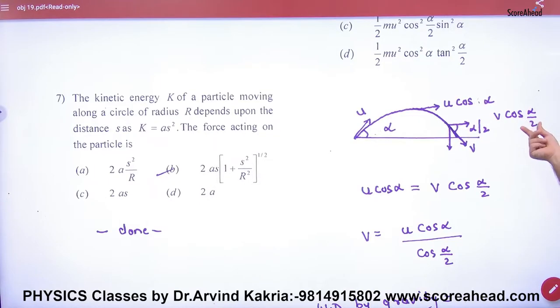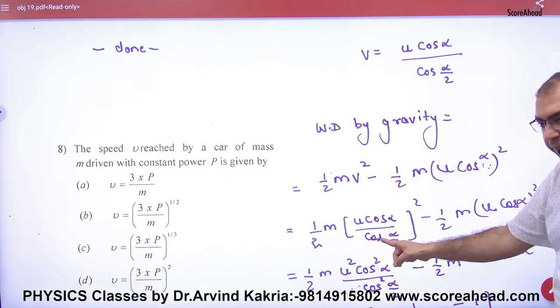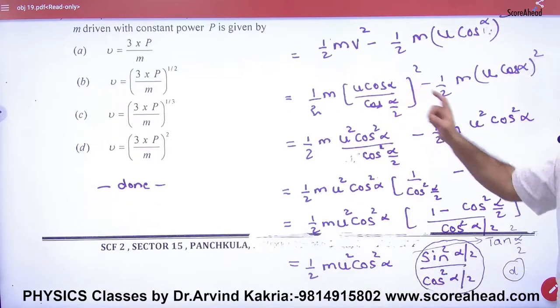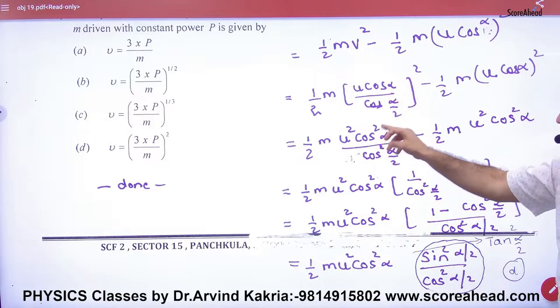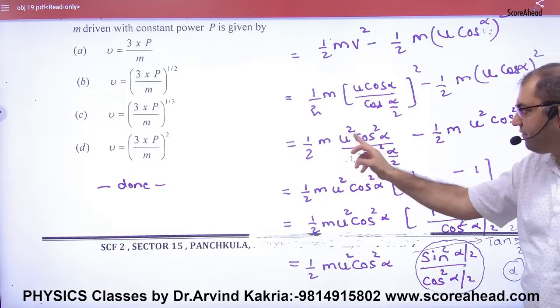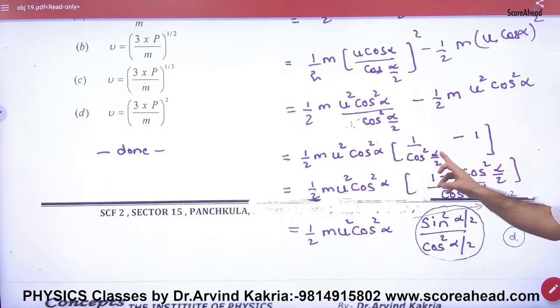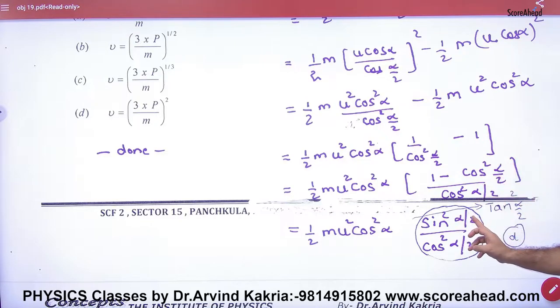This point velocity is v. Change of energy: half mv square minus half m u cos alpha square. Change of kinetic energy equals work done. Horizontal velocity u cos alpha is equal to v cos alpha by 2, because v I have assumed. So here, solve v, this v put here. So when we put this v here, whole square, u square cos square.